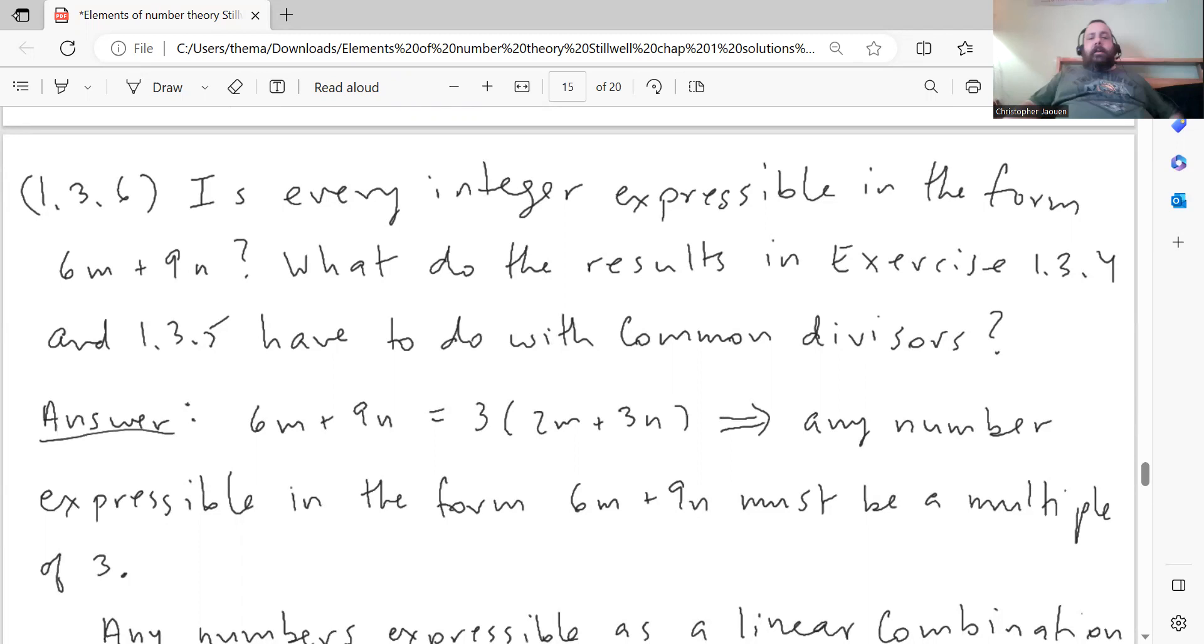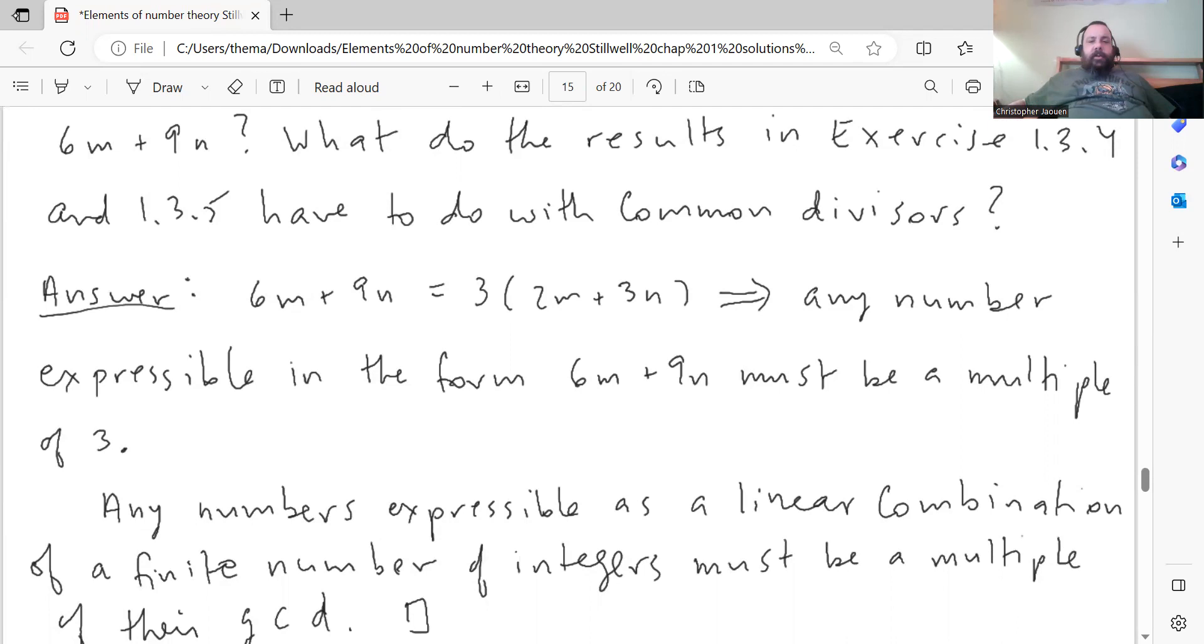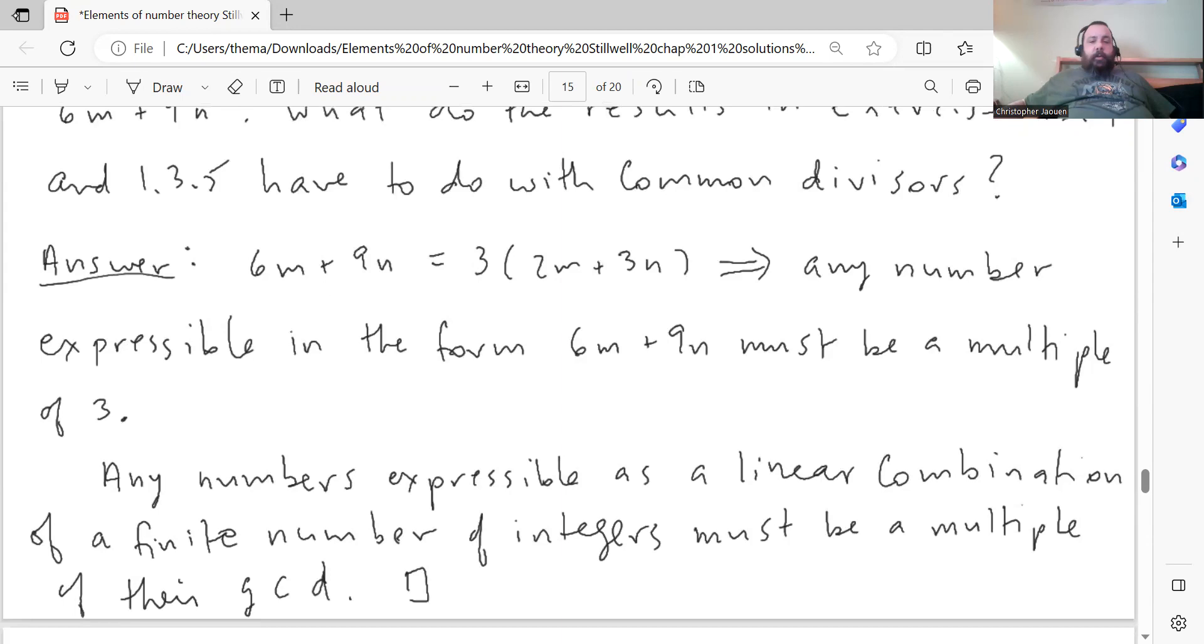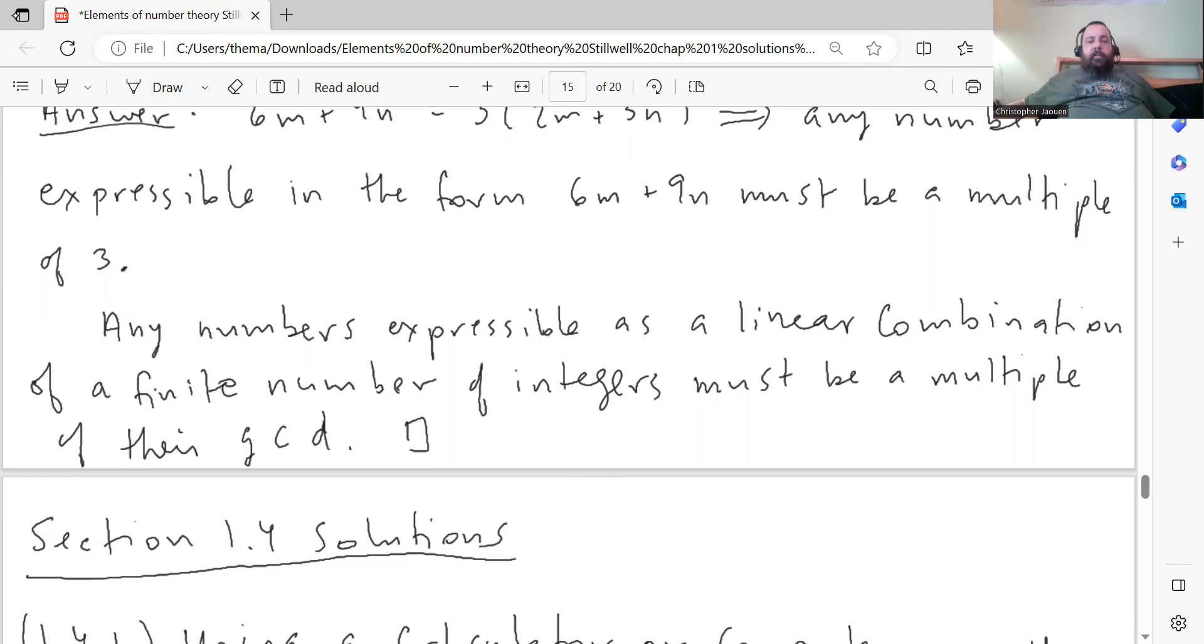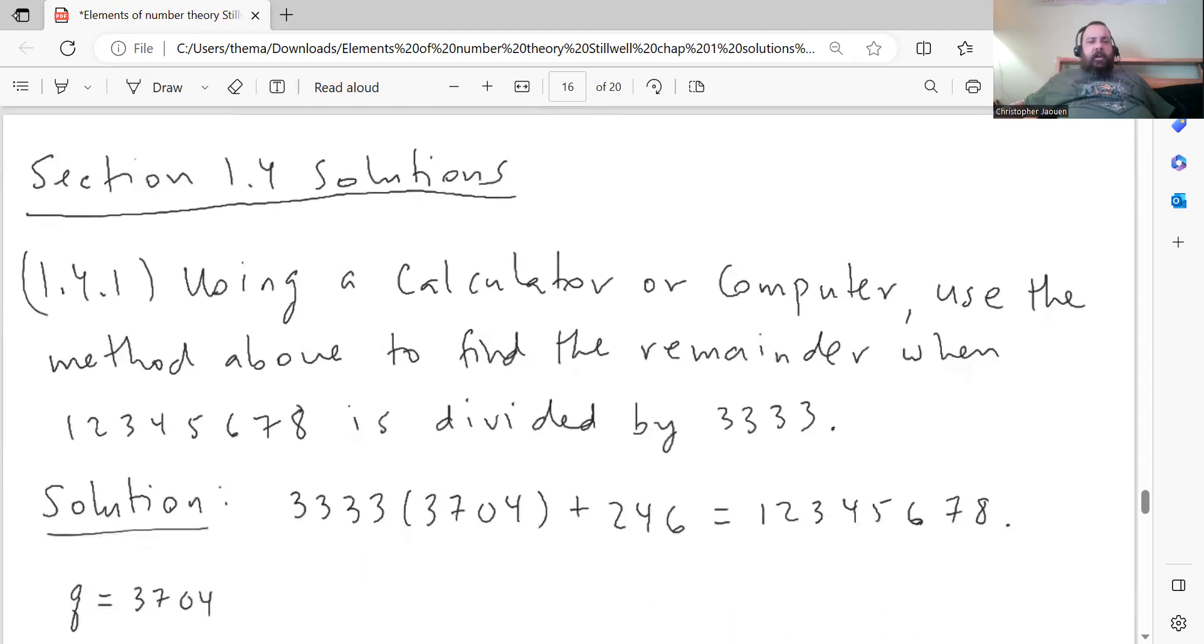Question 1.3.6: Is every integer expressible in the form 6m plus 9n? What do the results in exercise 1.3.4 and 1.3.5 have to do with the common divisor? So 6m plus 9n can always be written as 3 times 2m plus 3n, which means that any number expressible in the form 6m plus 9n must be a multiple of 3. You can't get any number that's not a multiple of 3 as a sum of that form. So any numbers expressible as a linear combination of a finite number of integers must be a multiple of their GCD. That's what the problems have to do with common divisors. I also mentioned this in passing in the section summaries.